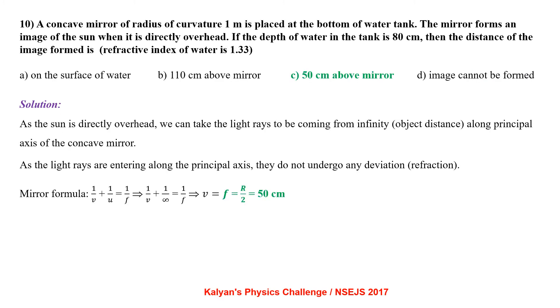A concave mirror of radius of curvature 1 m is placed at the bottom of a water tank. The mirror forms an image of the sun when it is directly overhead. If the depth of water in the tank is 80 cm, then the distance of the image formed is. Refract index of water is 1.33. As the sun is directly overhead, we can take the light rays to be coming from infinite object distance along the principal axis of the concave mirror.